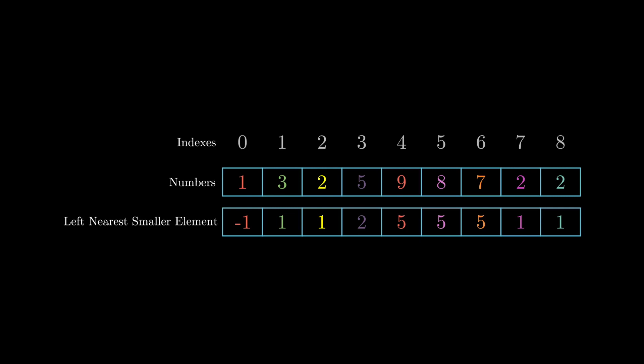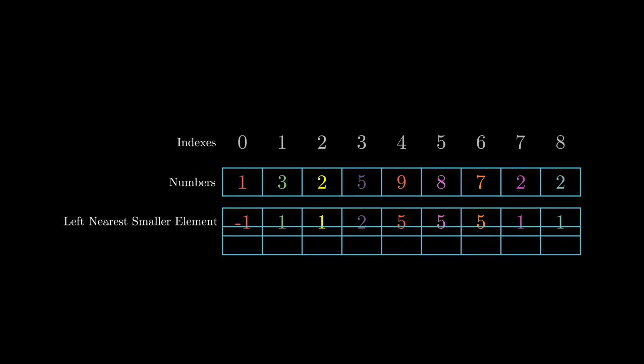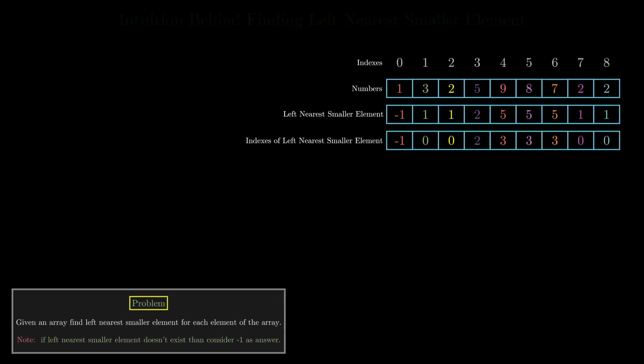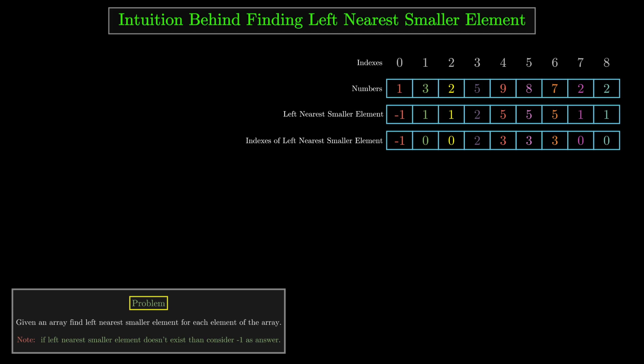Before moving forward, let's modify the problem statement slightly. Instead of finding the left nearest smaller element for each element, we will find the index of the left nearest smaller element, because with the help of the index we can easily retrieve the original number present at that index. Now let's see how to approach the solution to find the LNS of each number.